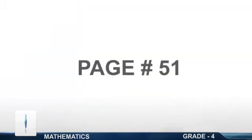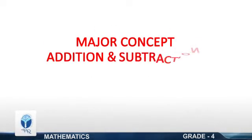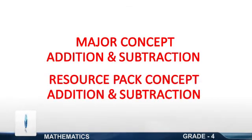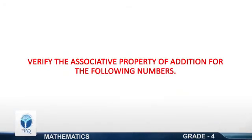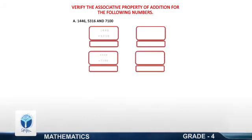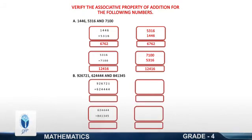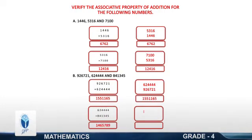Page 51. Major Concepts: Addition and Subtraction of Whole Numbers. Resource Pack Concepts: Addition and Subtraction of Whole Numbers. Verify the associative property of addition for the following numbers. A: 1,446 plus 5,316 plus 7,100. B: 624,444 and 841,345.